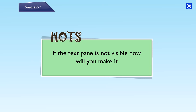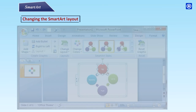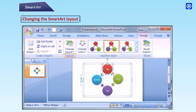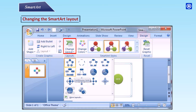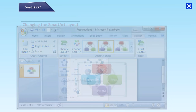If the text pane is not available, how will you make it visible? Changing the Smart Art layout. Step 1: Select the Smart Art object. Step 2: Click on Change Layout. Step 3: Click on the layout of your choice. The layout will be applied.